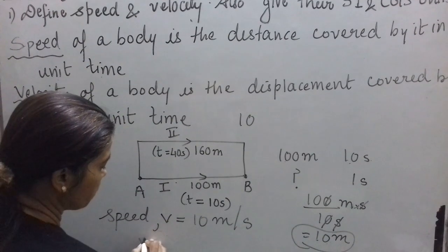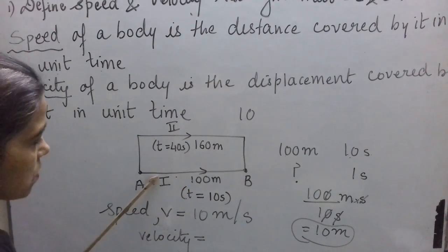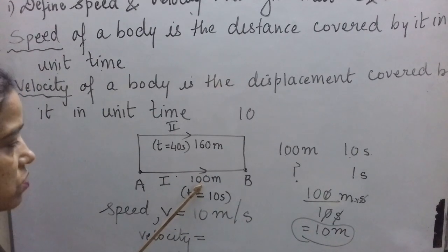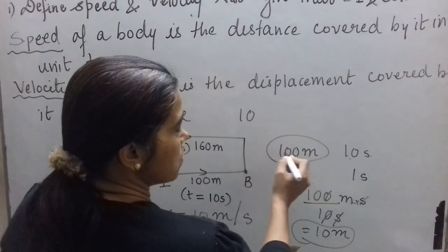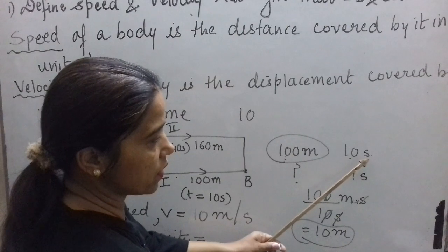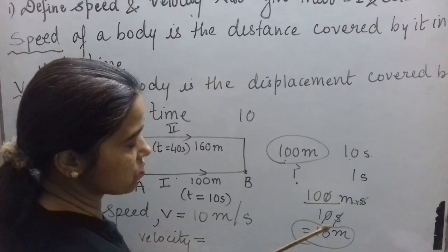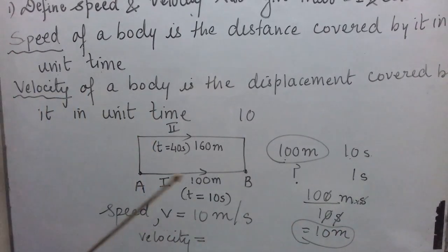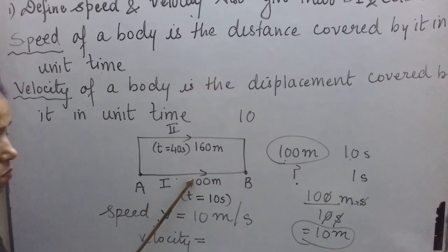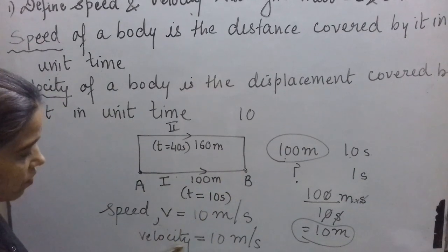For velocity of the first person: since the path is straight, displacement magnitude equals distance, which is 100 meters. In 1 second, displacement covered is 10 meters. So velocity is 10 meters per second from A towards B. When we include direction we write it as a vector; if we want only magnitude it is 10 meters per second — same as speed for straight-line motion.